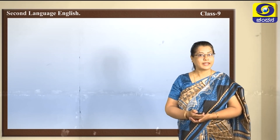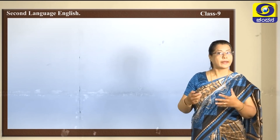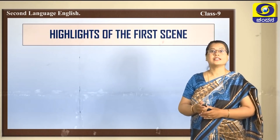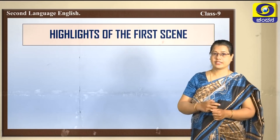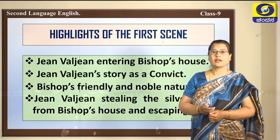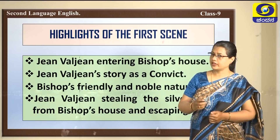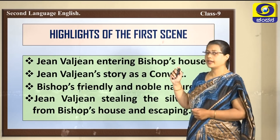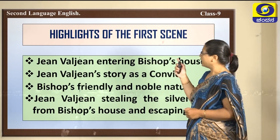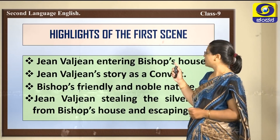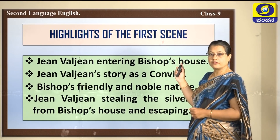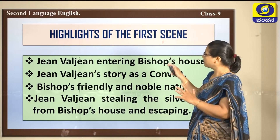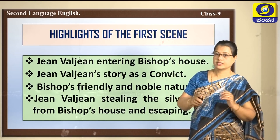Did you all enjoy the play? Did you all see what happened in the first scene? Now let us see the highlights of the first scene: Jean Valjean entering the bishop's house; Jean Valjean's story as a convict; the bishop's friendly and noble nature; and Jean Valjean stealing the silverware from the bishop's house and escaping. These are the points we came to know through this scene.